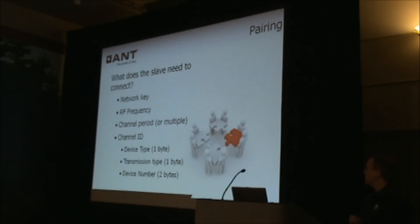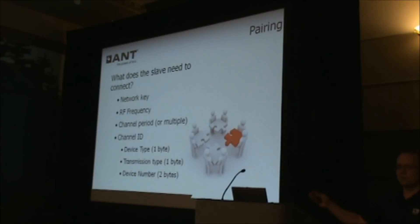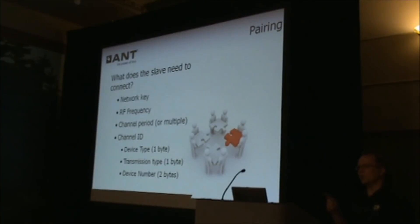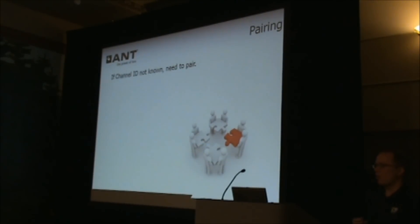There is also a two-byte device number, which should ideally be unique across all different devices. This is a number you need to define and set in your application — you can make it random or increment it with each device you ship. The key point is that the slave will not necessarily know this device number, so when it doesn't, we need to do something called pairing, which is simply the process of a slave acquiring the channel ID from a master device.